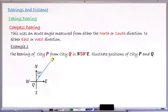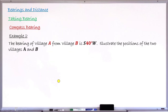Let's take another example. Example 2 says: the bearing of Village A from Village B is south 40 degrees west, that is S40°W. The question asks to illustrate the positions of the two villages A and B. We now mark Village B first, because this is the bearing of A from Village B.